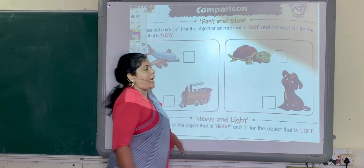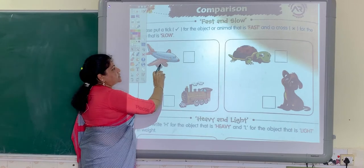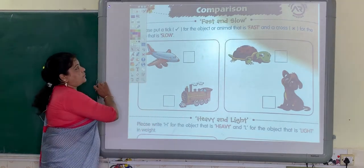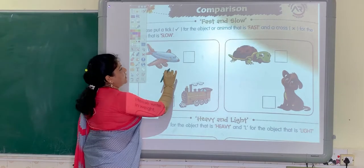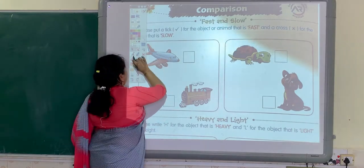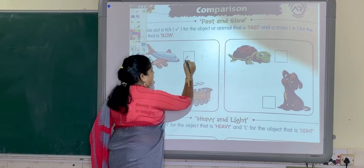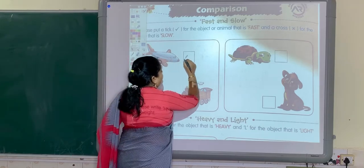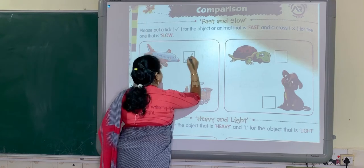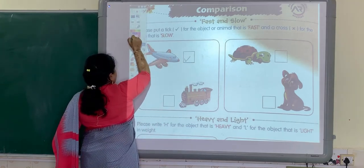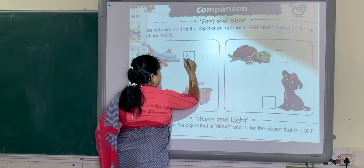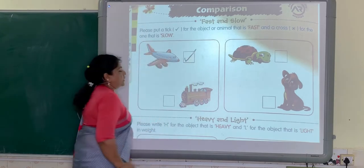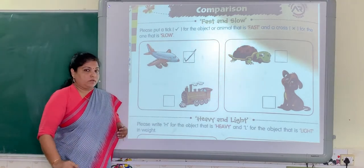Let's do the activity. I told you this aeroplane moves fast. We have to tick the object that moves fast. Put a tick in the box for the object that is moving fast. Now, this train moves slow.